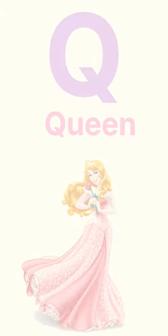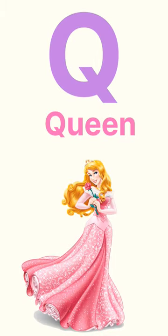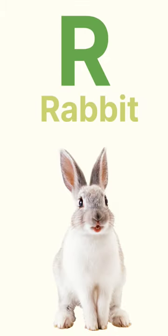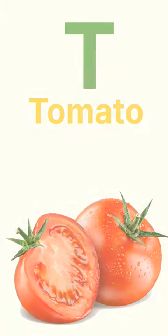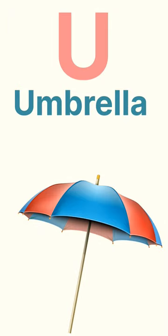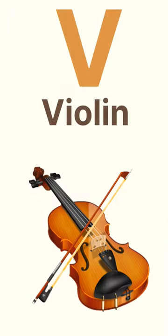O for Orange, P for Panda, Q for Queen, R for Rabbit, S for Sun, T for Tomato, U for Umbrella.